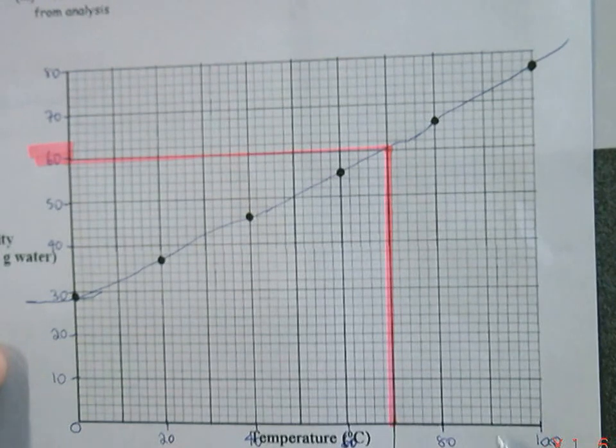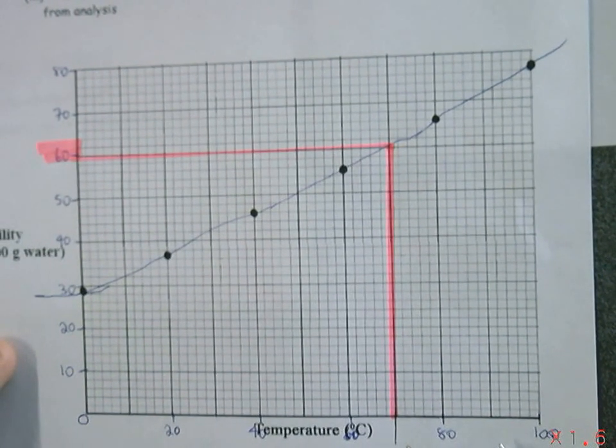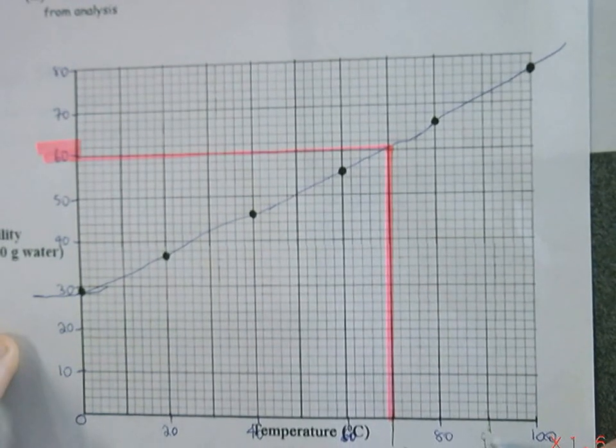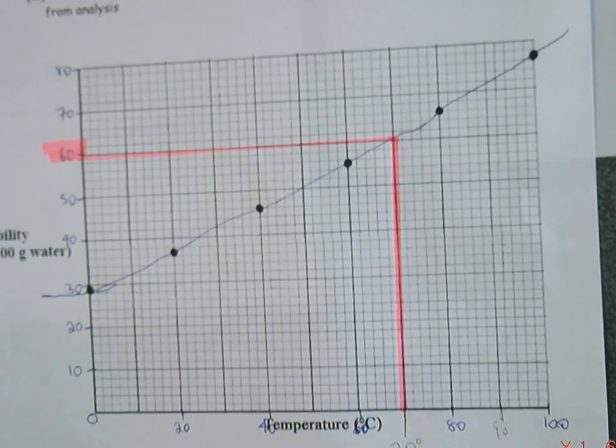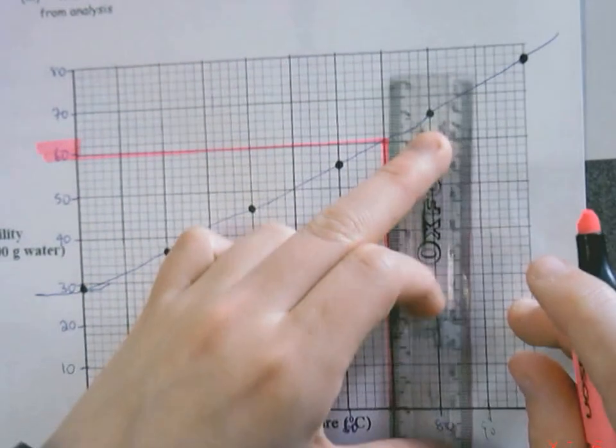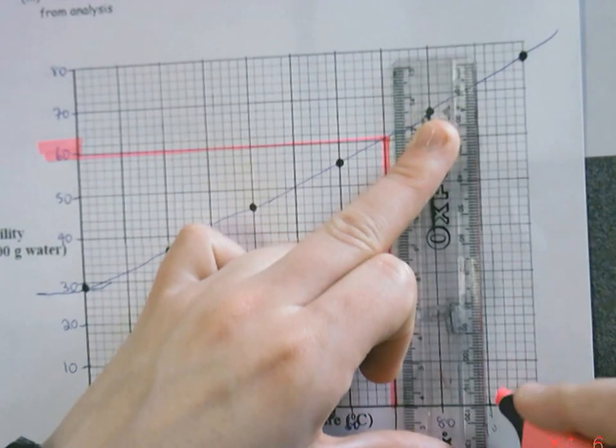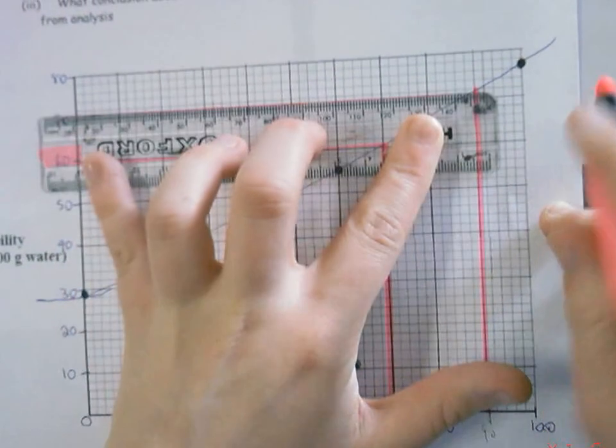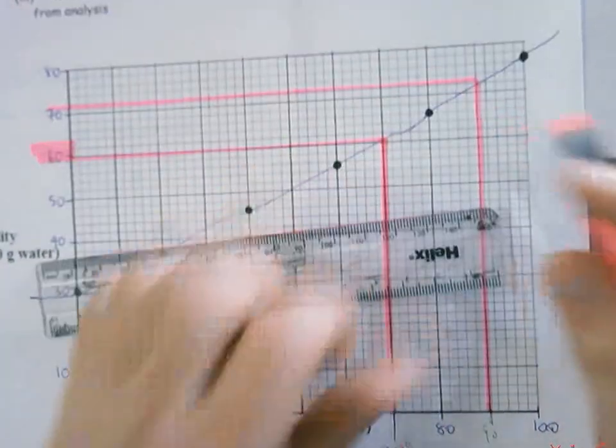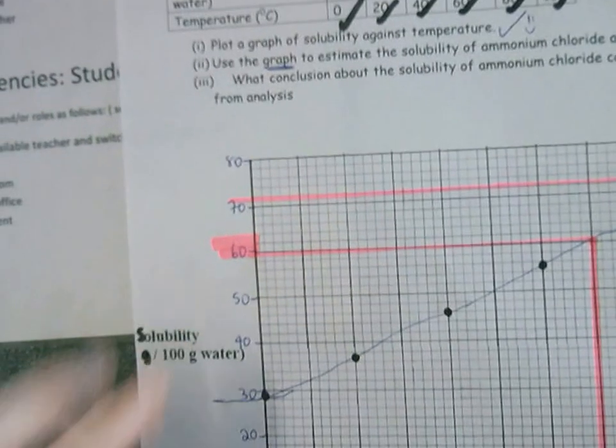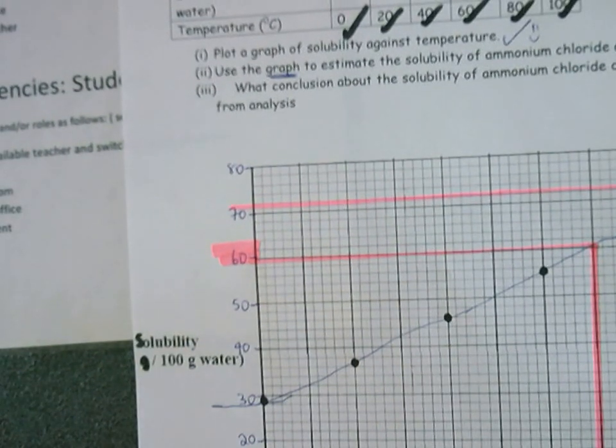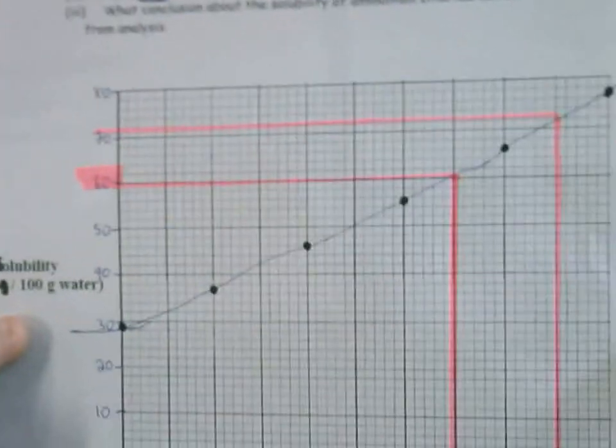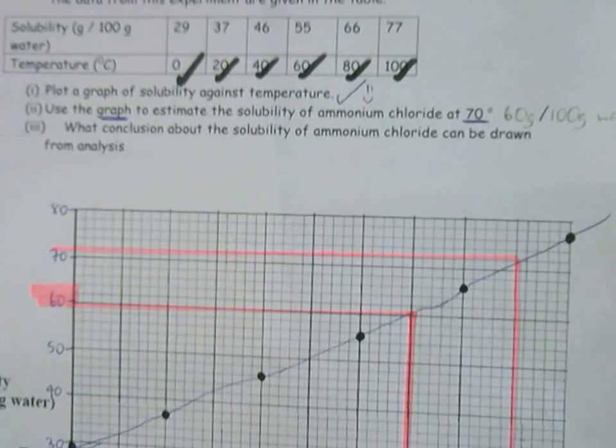You could be told to find solubility when temperature is 90. You would go to 90, which is here, and you would do the exact same thing. In this case there, you'd be talking about 72 grams of your solubility. That's that part done.